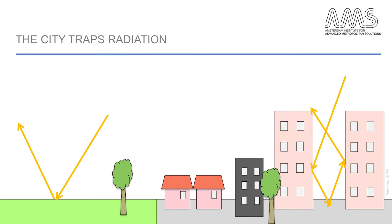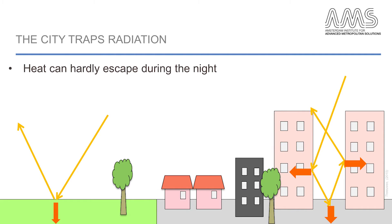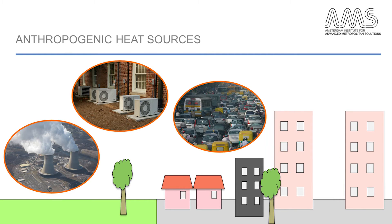The formation of the urban heat island is caused by various processes. First of all, the city consists of streets with buildings. These buildings trap the solar radiation that enters the street. This energy heats up the buildings and streets and can hardly escape during the night. The city also has other sources of heat such as waste energy from electricity production, transportation, or heating and cooling of buildings. In addition, human metabolism — people — are a source of heat in the city as well.